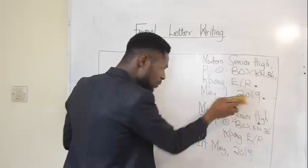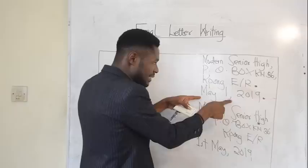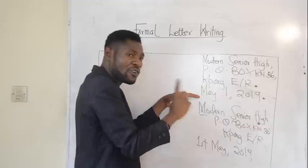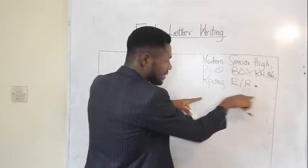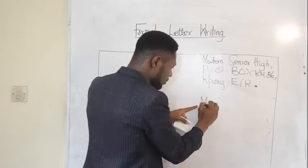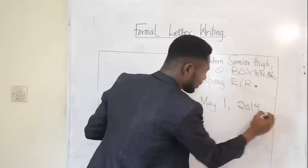There is one thing I have forgotten to say. With respect to the date, you realize that the date is not part of the address. The date is different from the address. So we expect that in writing the date, you leave a space before you write it. There should be a space before the date — May 1, 2019. Full stop. The date is not part of the address.